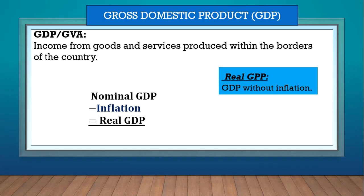Welcome, Grade 12, to part 2 of the circular flow topic. In this video we will focus mostly on GDP, gross domestic product. Sometimes it's called GVA, gross value added. GDP and GVA are synonyms — they mean exactly the same thing. GDP looks at income from all goods and services produced within the country. That's how we calculate GDP.